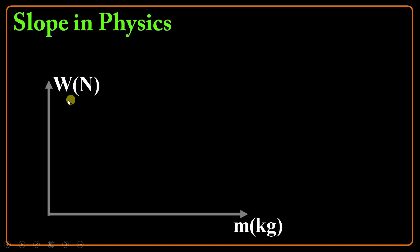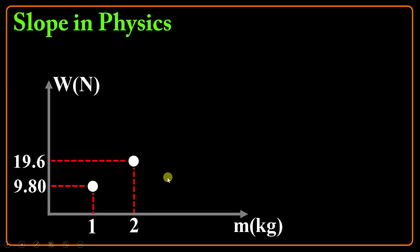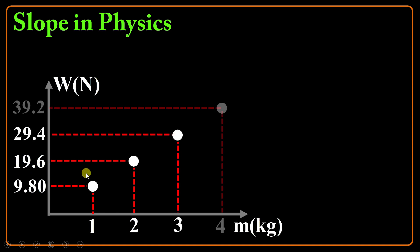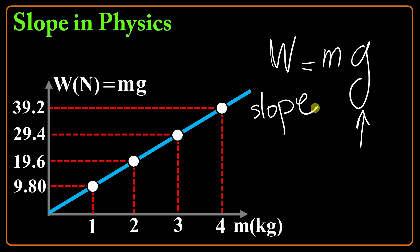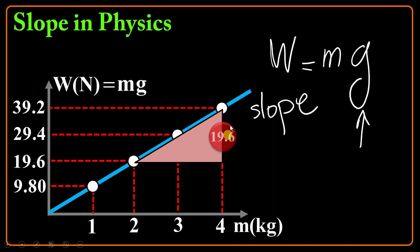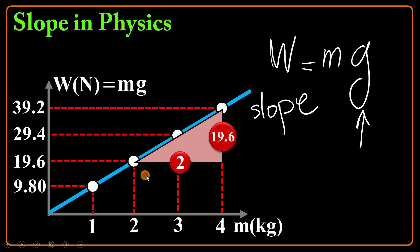Slope in physics. Suppose the vertical axis indicates the weight of an object in Newtons and the horizontal axis indicates the mass of the object in kilograms. If the mass is 1, the weight might be 9.80. If the mass is 2, the weight will be 19.6, and so forth. We connect those points. In physics, we know that weight and mass are connected by W equals mg, where g is the gravitational acceleration. According to the mathematics, g is also the slope of this line. Establishing a triangle, height is 19.6 and base is 2, so dividing gives 9.80 — that's g.